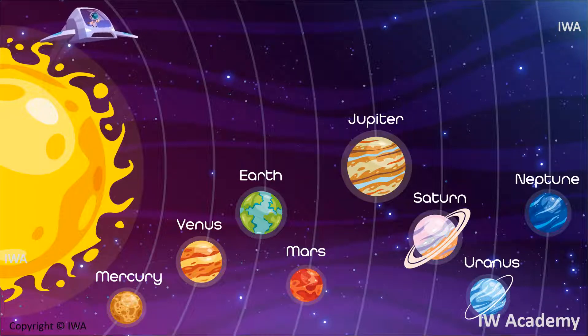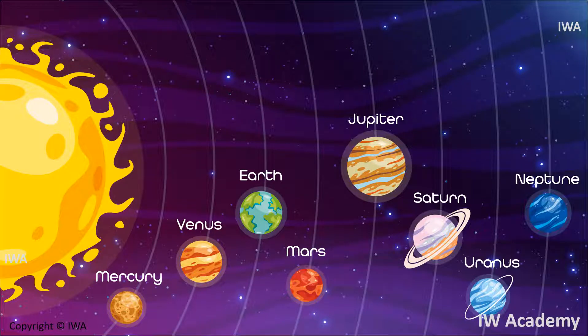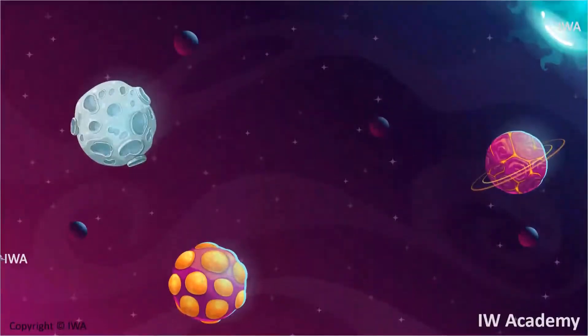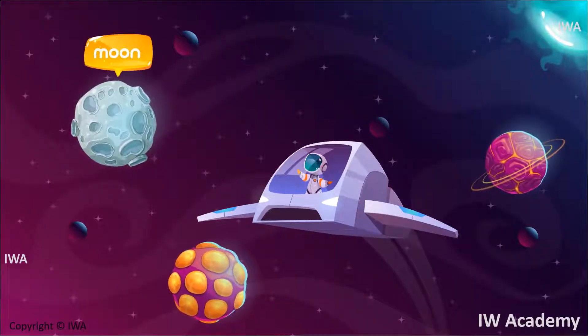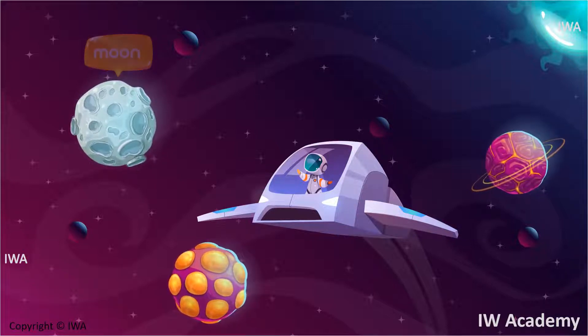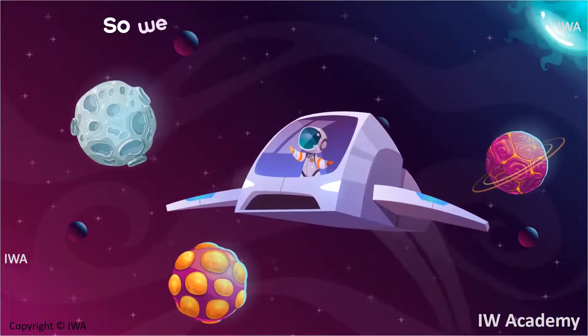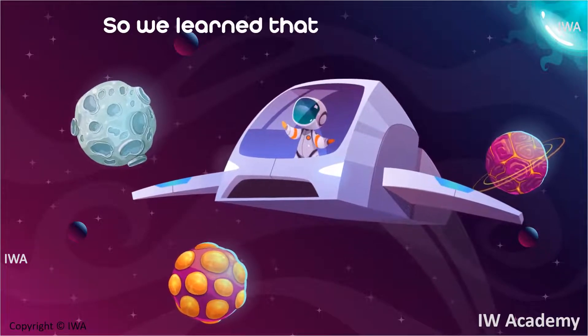Now we are going to see the moon. Hold on tight, here we go! This is the moon. We always see it in the sky depending on its phases. The moon has eight phases.